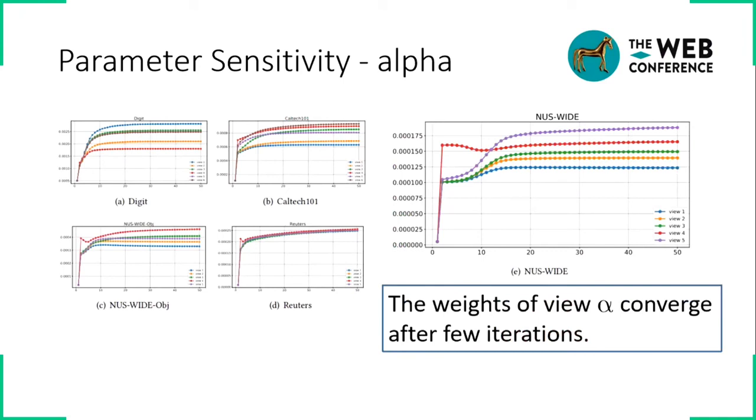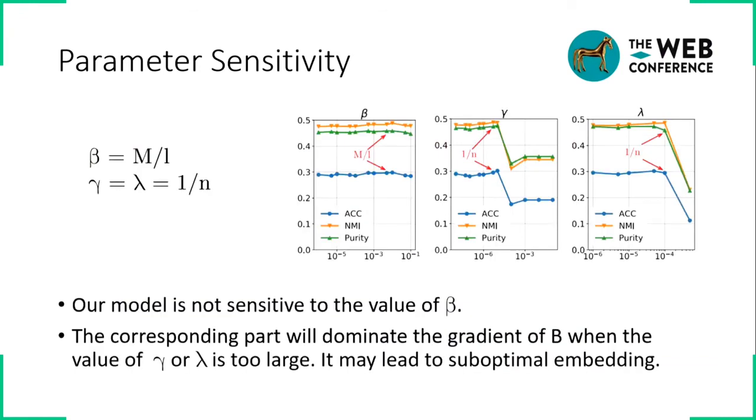In the parameter sensitivity study, we show the value of the view weights alpha converged after few iterations. For parameter b, our model is not sensitive to the value of variable.